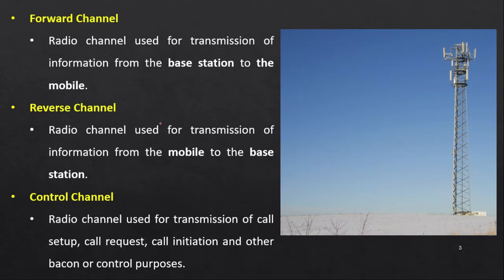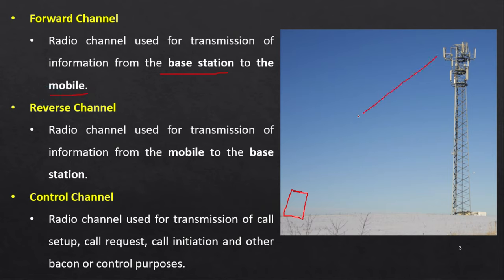Next we have different kinds of channels present in wireless communication. To understand forward channel, reverse channel, and control channel, consider a base station and a mobile phone. The forward channel is a radio channel used for transmission of information from the base station to the mobile station. It is also called the downlink.